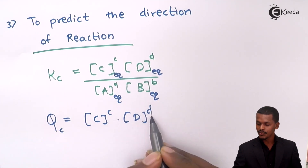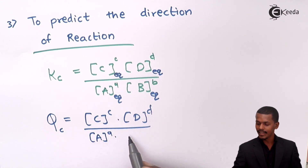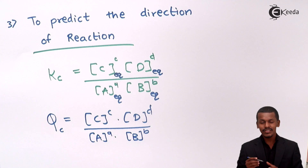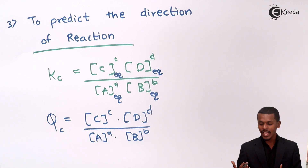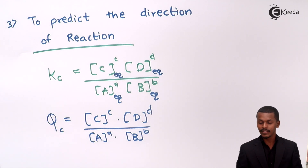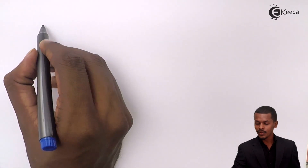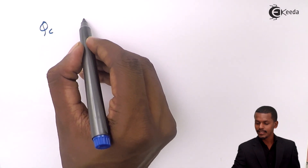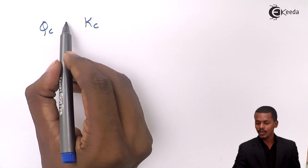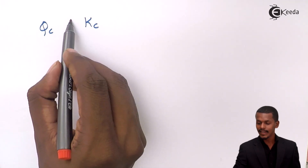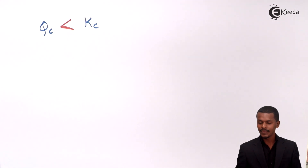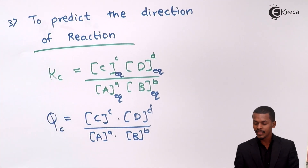The reaction quotient Qc is written as: concentration of C raised to c, times D raised to d, divided by A raised to a times B raised to b — the same form as Kc but using non-equilibrium concentrations. It is very different from the equilibrium constant Kc. Once we calculate Qc, we can compare it to Kc to predict the direction of the reaction.